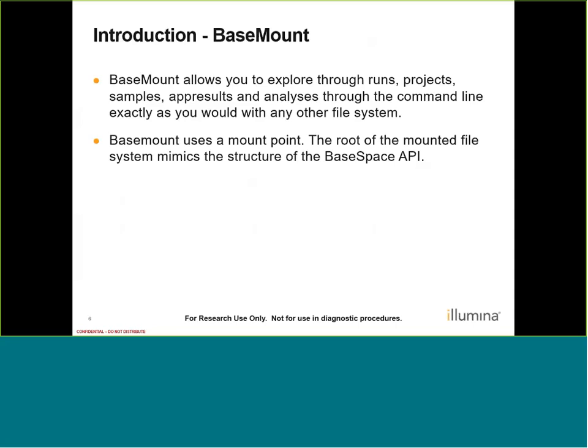BaseMount uses a mount point. The root of the mounted file system mimics the structure of the BaseSpace API. This is how we're able to browse a BaseSpace account like a file system and access directories within runs and projects. BaseMount provides access to the raw files at various directories. With BaseMount, you can access all files associated with the samples — these files include downstream analysis files like FASTQs, BAMs, and VCFs, along with summary report files. These files would be produced by a particular app analysis that was performed on a sample or group of samples, such as any of our DRAGEN apps like germline, somatic, or RNA pipelines. You can then access files at the block level without having to download the entire content — for example, you can preview a FASTQ file in your shell with Linux commands without having to move or download it.